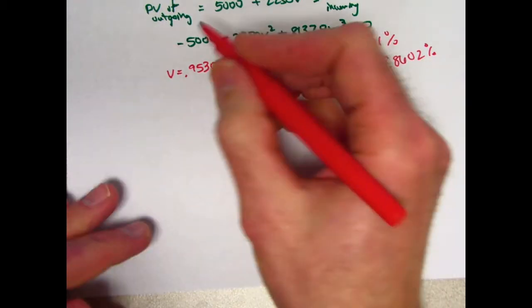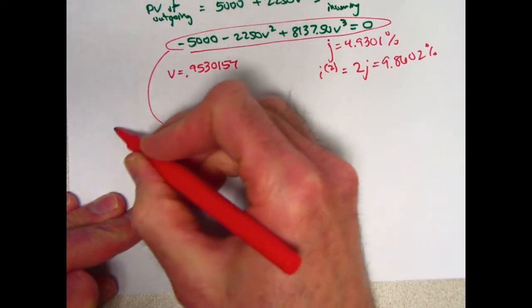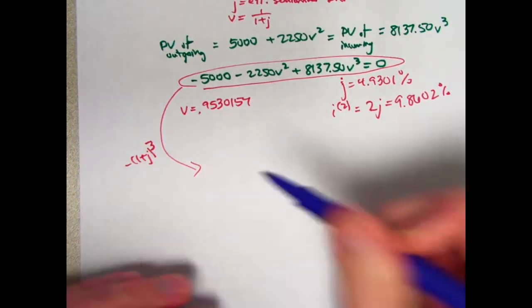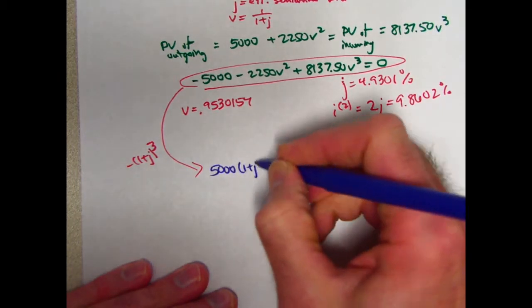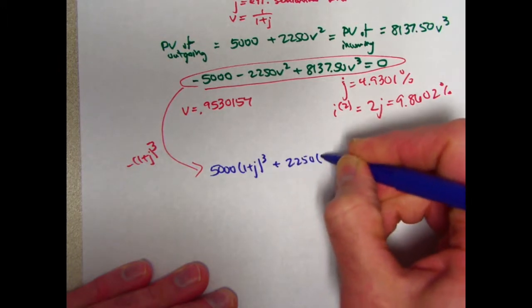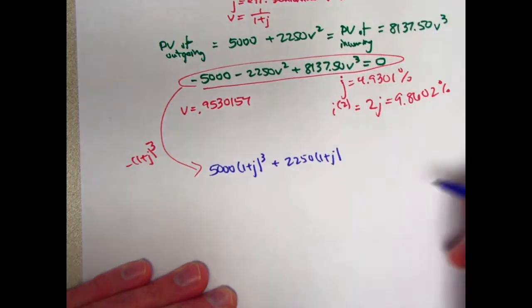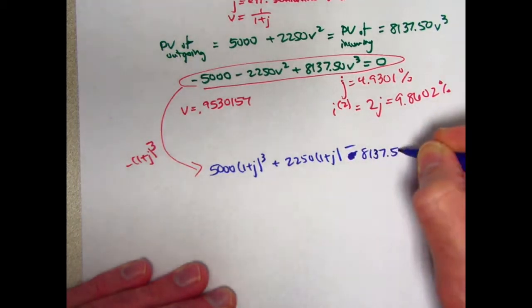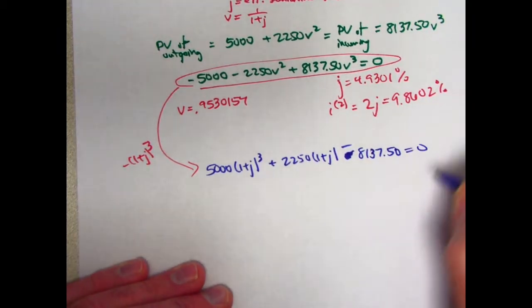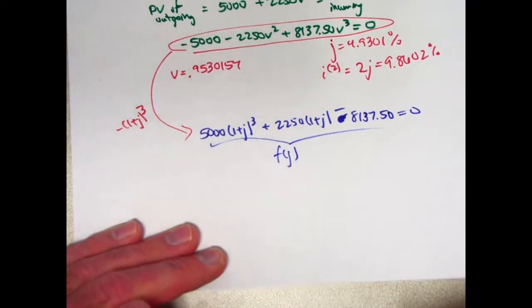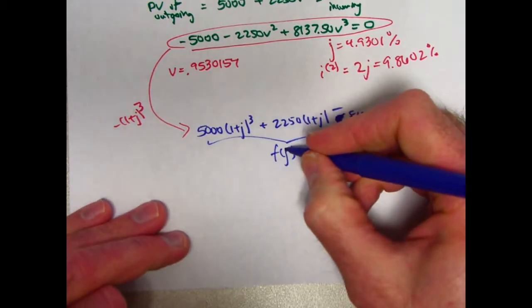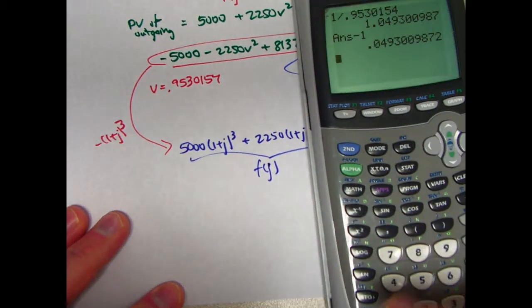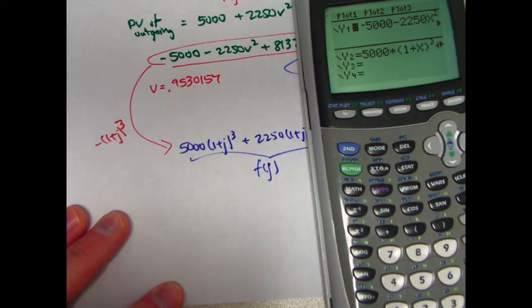Let's do one more thing. Let's multiply that equation by (1 plus J) cubed to write an equivalent equation involving J. That would be positive 5,000(1 plus J) cubed plus 2,250(1 plus J) minus 8,137.50 equals 0. I could think of this as a function of J and graph it, and hopefully it has a root just barely bigger than 0 at 0.049301.